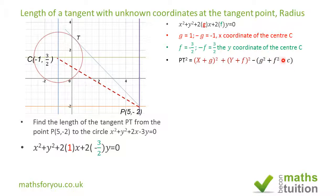If we expand these brackets, we end up with PT² = x² + y² + 2gx + 2fy + c. The capital X is the x-coordinate of point P, and capital Y is the y-coordinate of point P.